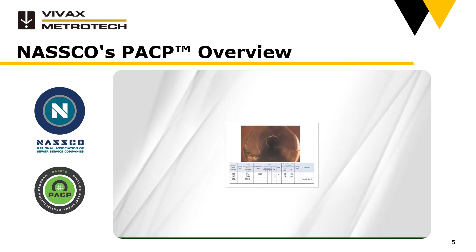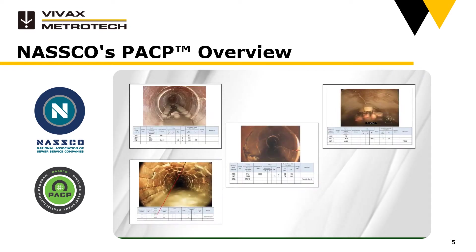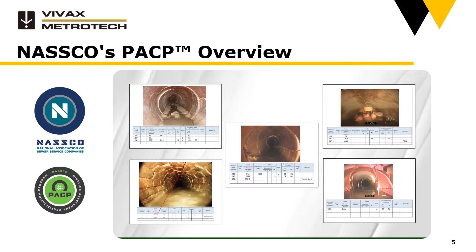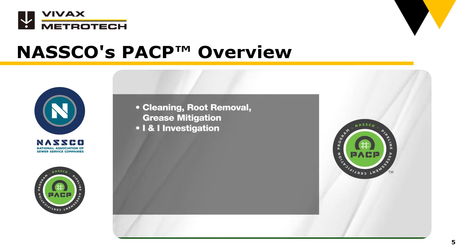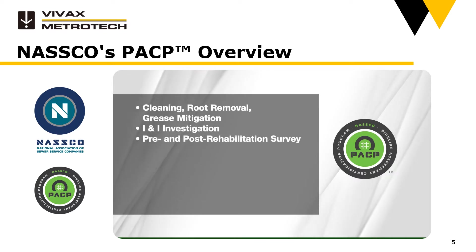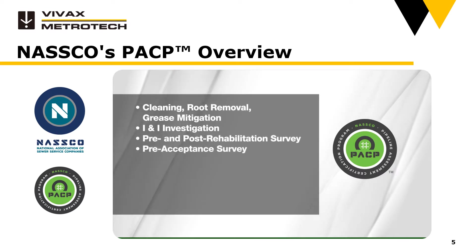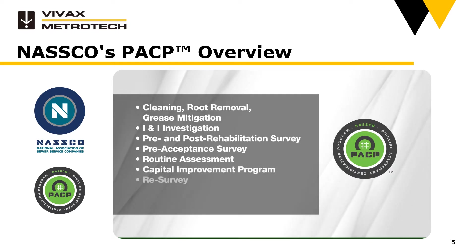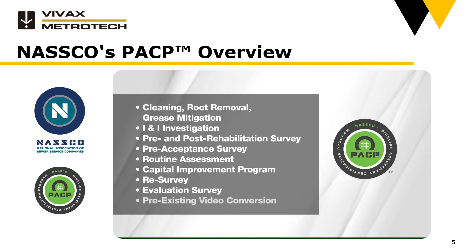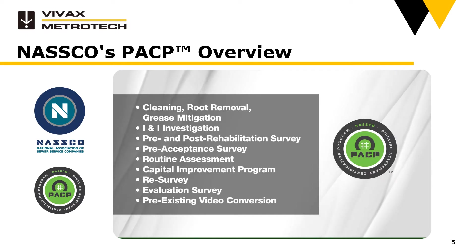The purpose of PACP training and certification is to standardize the collection and coding of each defect and observation in a consistent and reliable manner for the different types of TV inspections, including maintenance-related activities like cleaning, root removal, and grease mitigation; infiltration and inflow investigation; pre- and post-rehabilitation survey; pre-acceptance survey, which can be used to see if there are any defects in a new pipe due to construction prior to accepting it; routine assessment; capital improvement program assessment; re-survey; sewer system evaluation survey; and conversion of pre-existing video to PACP so that the data collected can be added to the database for future comparisons.